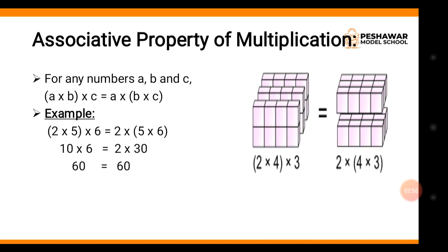یہاں پہ example ہے: (2 multiply 5) multiply 6۔ پھر اس طرح بھی کر سکتے ہیں کہ 2 کو باہر کر لیں اور 5 اور 6 کو multiply کر لیں — so both will have the same answer. Left side پہ: 2 multiply 5 is equal to 10, then 10 multiply 6 is equal to 60. Right side پہ: 5 multiply 6 is 30, then 2 multiply 30 is also 60. تو کوئی بھی دو کو پہلے multiply کر لو، order change کر کے multiply کرو — same result آئے گا۔ This is the associative property of multiplication.